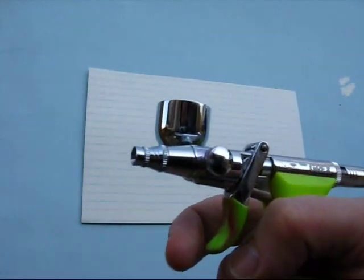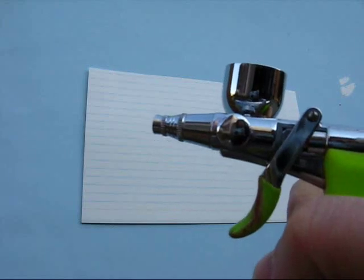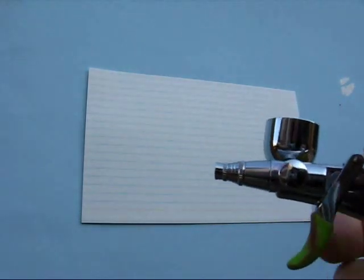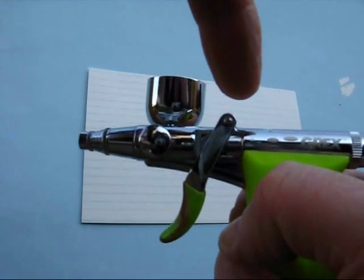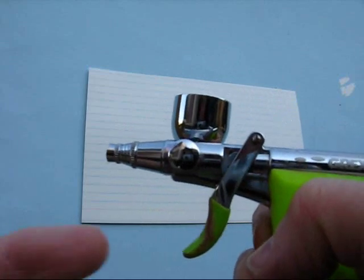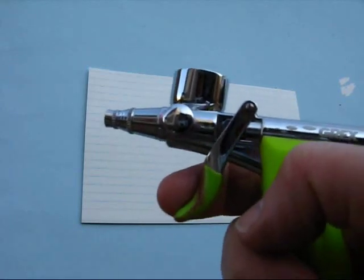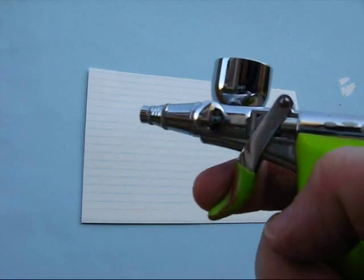The Grex Tritium is an internal mix, double-action airbrush. Unlike other double-action internal mix airbrushes, which have a trigger for the air and an activator for the paint, the Grex has a dual-action trigger. You pull it in slightly, air comes out. Pull it in another notch, the paint comes out.